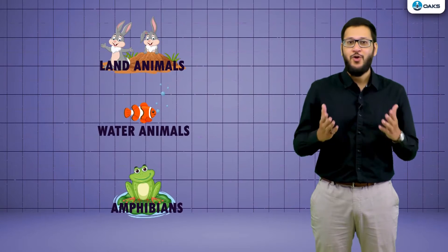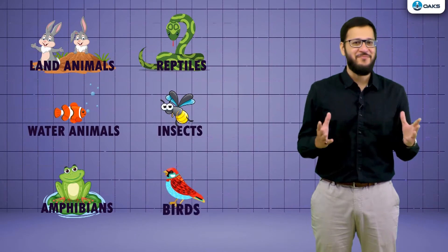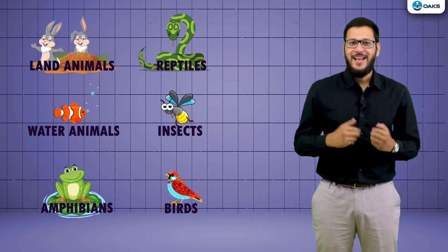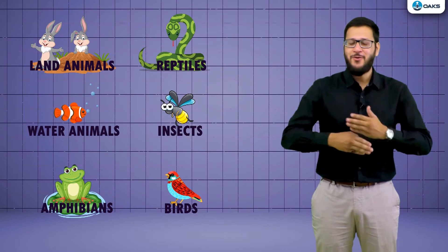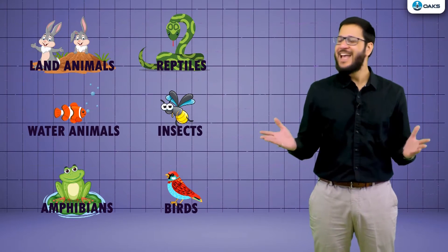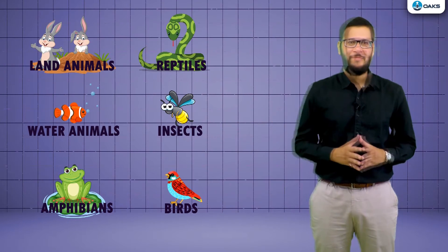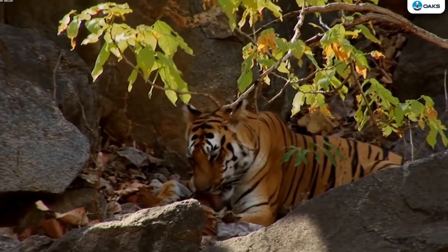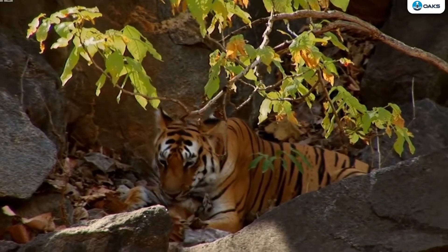Depending on all this, animals are divided into different types — namely land animals, water animals, amphibians, reptiles, insects, and birds. Come, let us look at all these types of animals here in this animal world. Look over there — can you tell me the name of that animal?